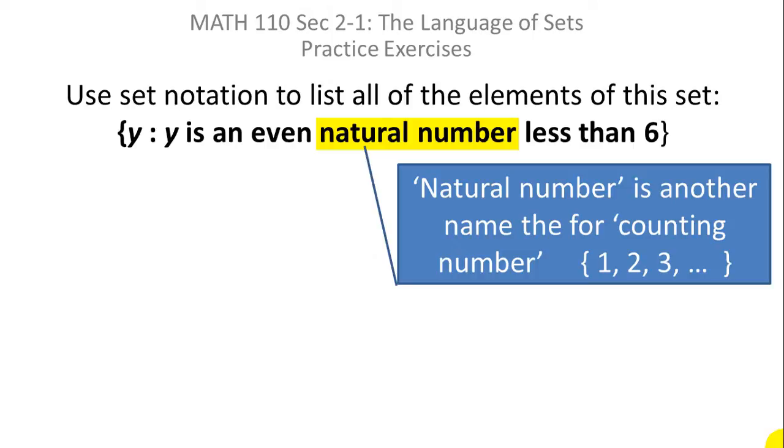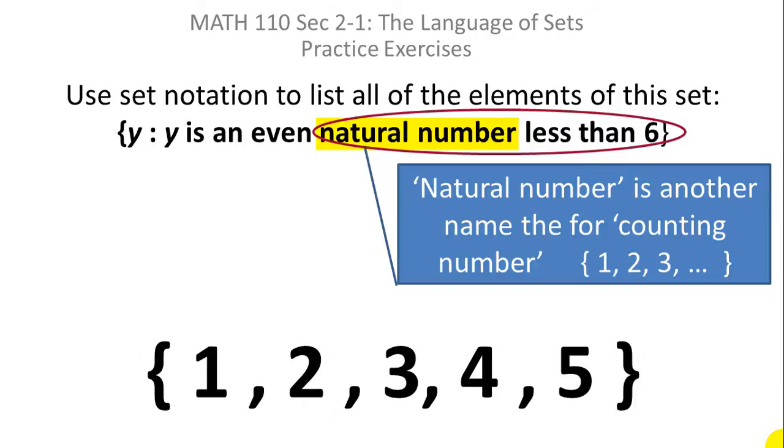The less than six part tells us that we don't choose six or greater. So if you just look at what I've circled there the natural numbers less than six that would be one, two, in other words you're counting numbers, less than six.